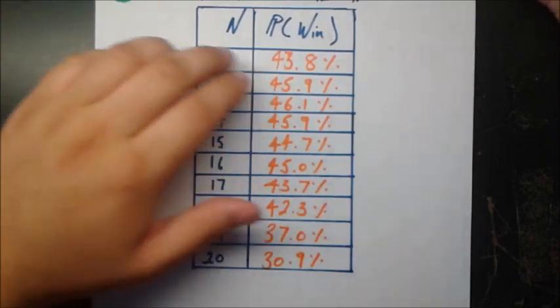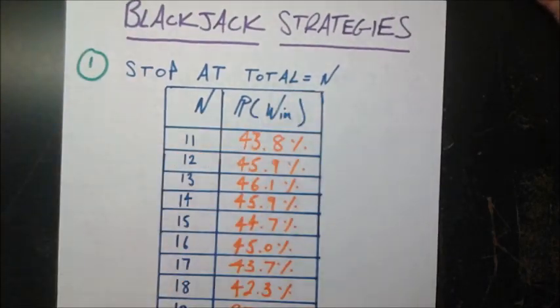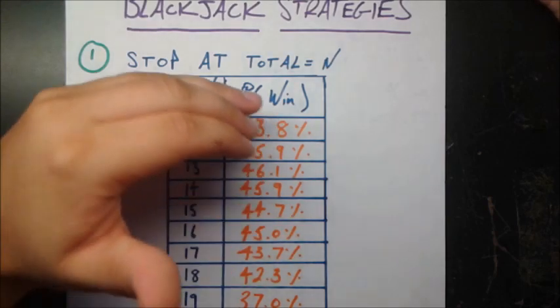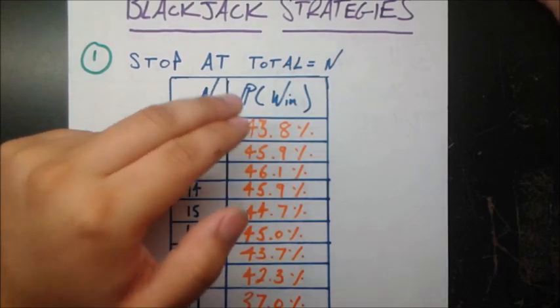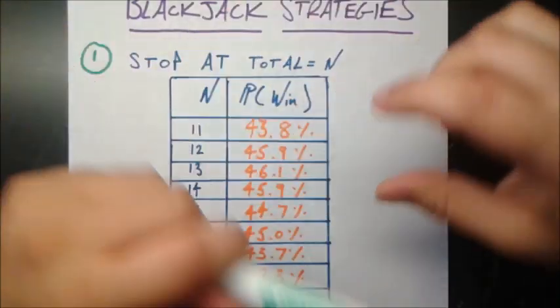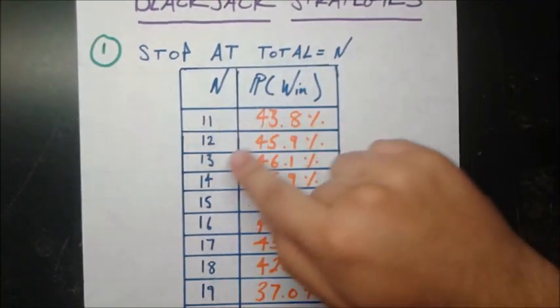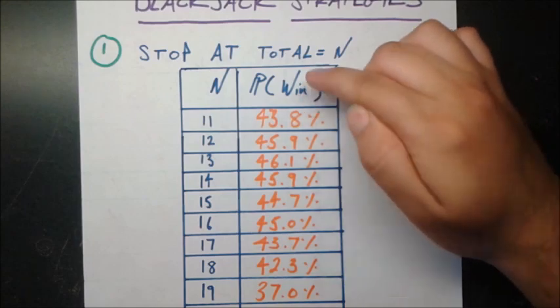Now, we're going to look at different variations on this rule. For example, we'll look at different values of n for this one and the probability of winning for each one. There's no math in this video. These probabilities are solely computer generated. We took 10,000 runs of blackjack using each of these strategies and found out the probability of winning under each of those strategies.